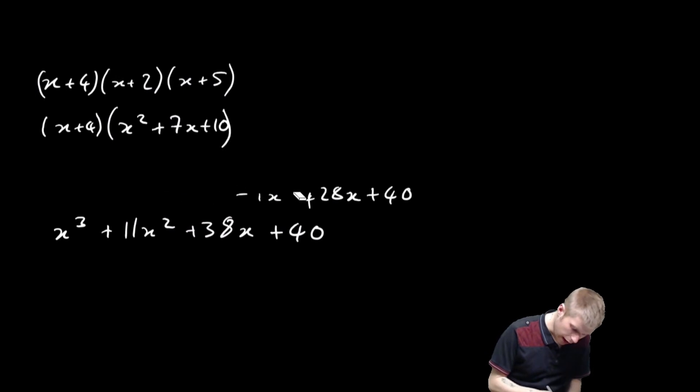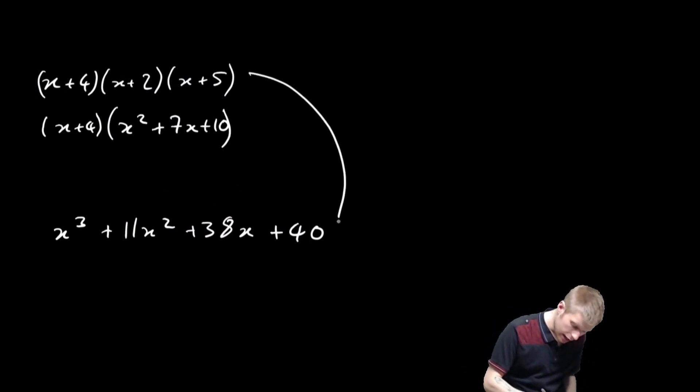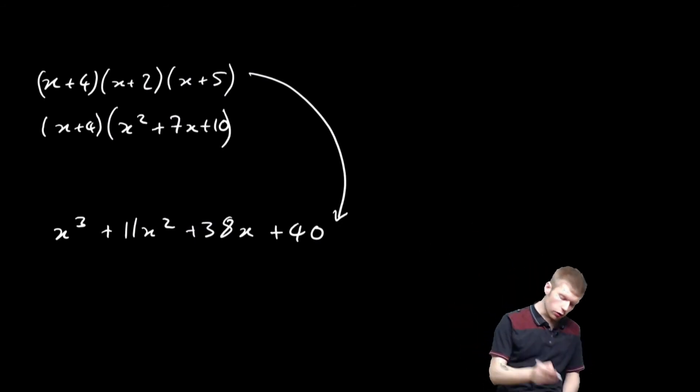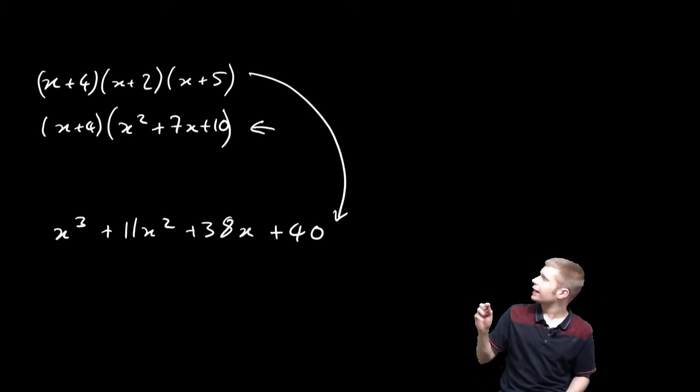So in other words, all I've done there is I've taken something which is factorized into something which isn't. I've taken it from factorized form into polynomial form. But don't neglect this middle step, this kind of intermediate step if you like.